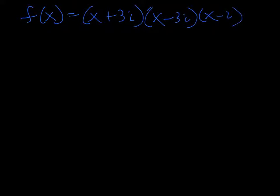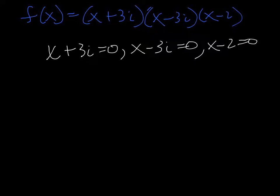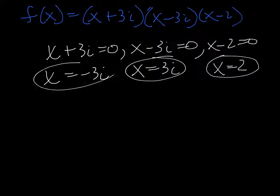So if I set each thing to 0, I've got x plus 3i equals 0. I get one real root down here. That's x minus 2. And then I get x to be negative 3i, and I get x to be 3i. So I have three roots.